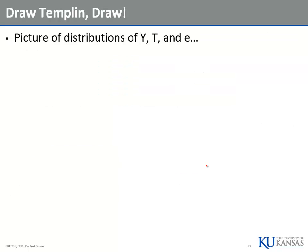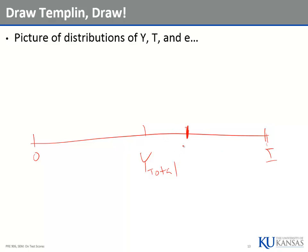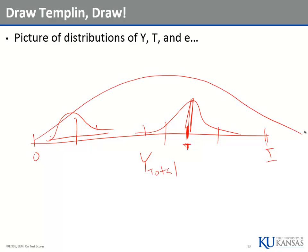On the board: this is Y, your test score, on the x-axis with items ranging from 0 to I. For any given person, their true score may be at a particular location, but their actual observed test score will fall somewhere in a distribution around that true score — it could be higher or lower. Once you get one observation from each person, you get overall variation in Y, some of it due to individual characteristics and some of it just random noise.